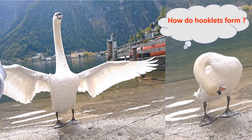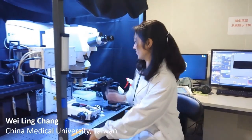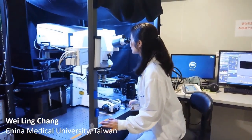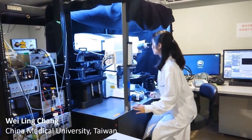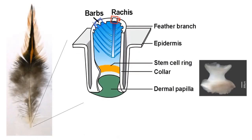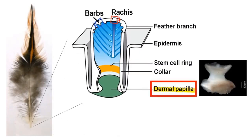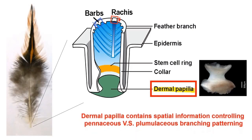But how do hooklets form? Dr. Wei-Ling Zhang decided to investigate how hooklets form at the cellular and molecular level. In one contour feather, the vane is formed from distal pennaceous to proximal pennaceous feather. All this process is happening in the same dermal papillae at the bottom of the follicle.